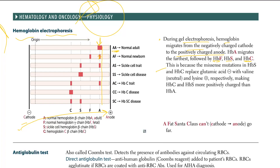Why do we have this ordering of first, second, third, and fourth positions? Because the missense mutation in HbS and HbC replaced glutamic acid, which has a negative charge — with valine, which is a neutral charge, and lysine, which is a positive charge, respectively. So in HbS, glutamic acid is replaced with valine. In HbC, glutamic acid is replaced by lysine, making HbC and HbS more positively charged than HbA.